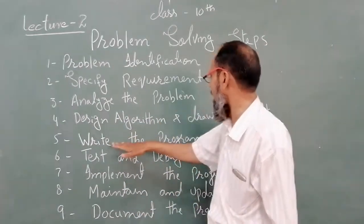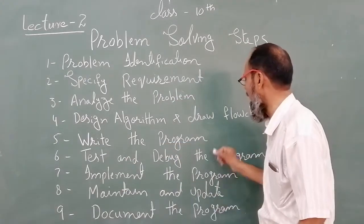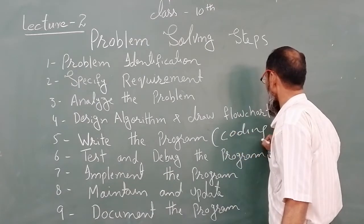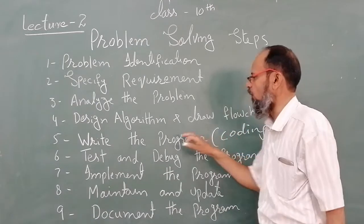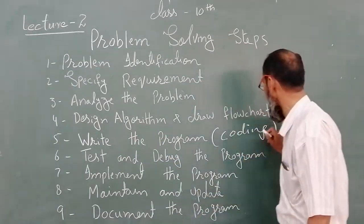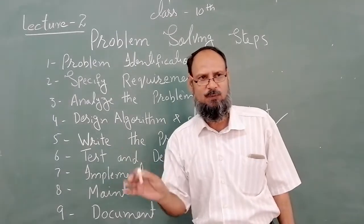The next one is to write the program. The program is also known as the coding. This is an MCQ: a program is known as - there are four options. You have to circle the coding. The coding is known as write the program.